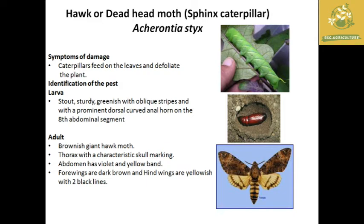The next important insect is the hawk's moth or dead head moth, belonging to the family Sphingidae. The scientific name is Acherontia styx. It gets the name 'dead head moth' based on the skull-like skeleton marking found on the thorax of the insect. The symptom of damage is that it is a gregarious feeder which defoliates the leaves. The larvae are stout and greenish with oblique stripes and a horn on the eighth abdominal segment.